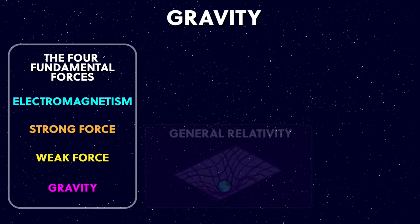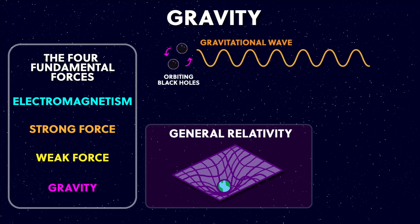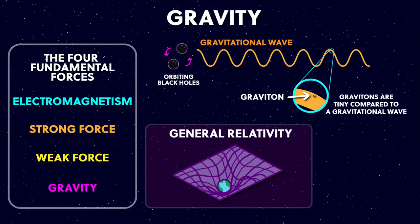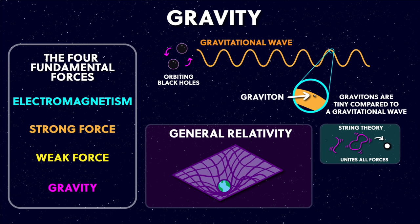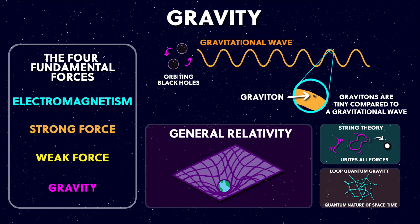Gravity is described by general relativity as the result of a curved space-time. People have predicted a gravity particle called a graviton, which would be the particle associated with gravitational waves. But unfortunately there's no way we can make a particle accelerator with high enough energies to probe this, because gravity is so weak in comparison to the other forces. Even so, physicists have been trying to squash the standard model and general relativity together for nearly a century to make a theory of quantum gravity, like string theory, or a quantum theory of space-time like loop quantum gravity.